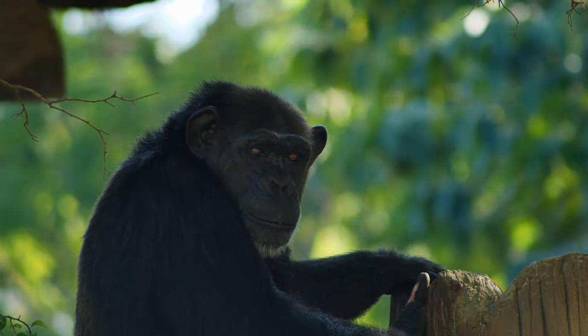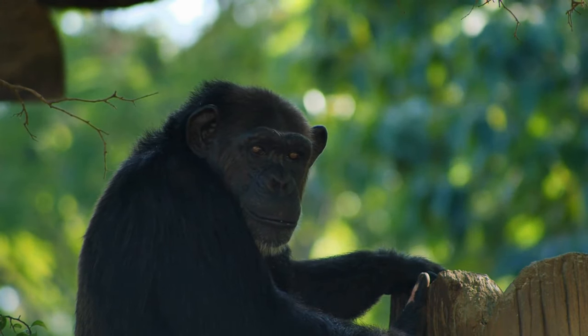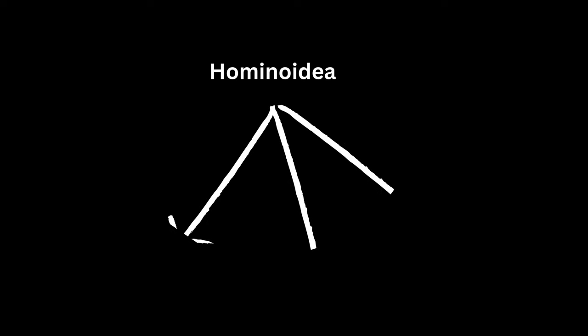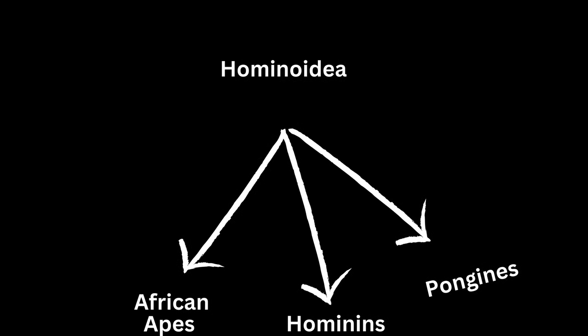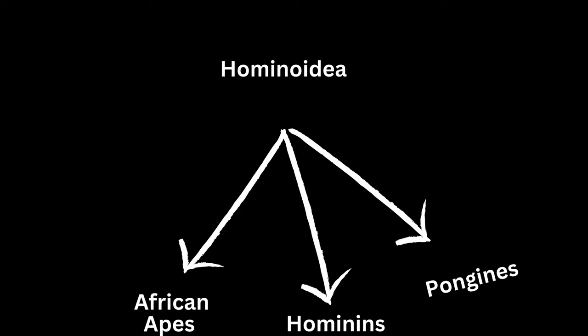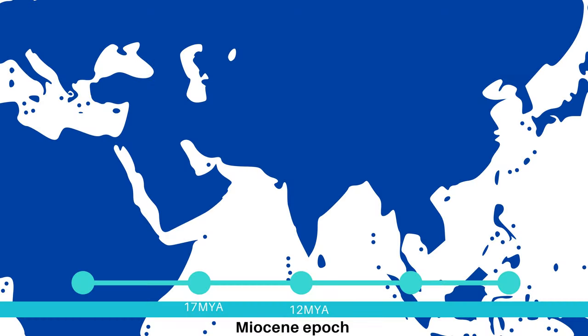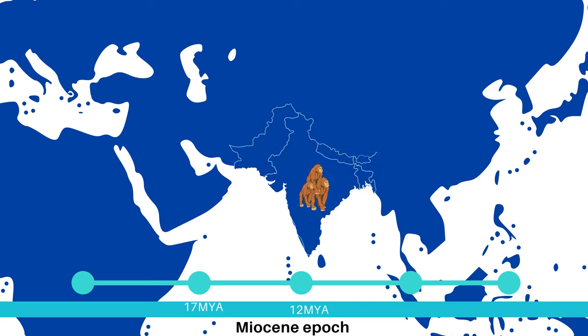The Hominoidae includes all living apes and humans. Pongini is one subfamily which includes orangutans in Asia. DNA analysis suggests that all African and Asian descendants of Hominoidae split from a common ancestor around 18.3 million years ago. This means some early hominoids migrated to Asia around that time.